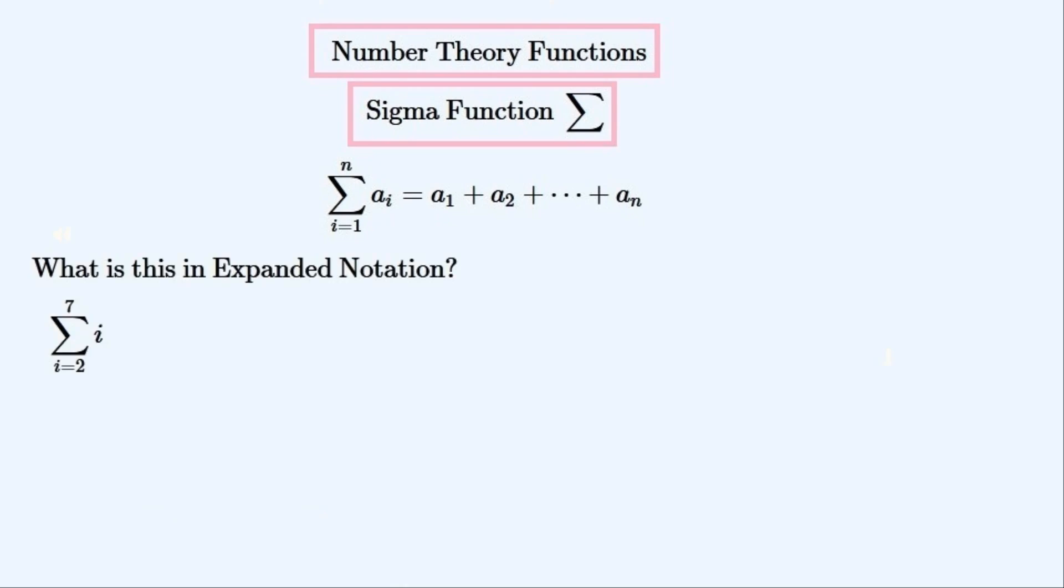So let us evaluate our first example. When this sum is expanded out properly it looks like this. i is looped from 2 to 7 in increments of 1. So it looks like the sum of all the numbers in between and including 2 and 7. And evaluating this long sum gives us this answer.